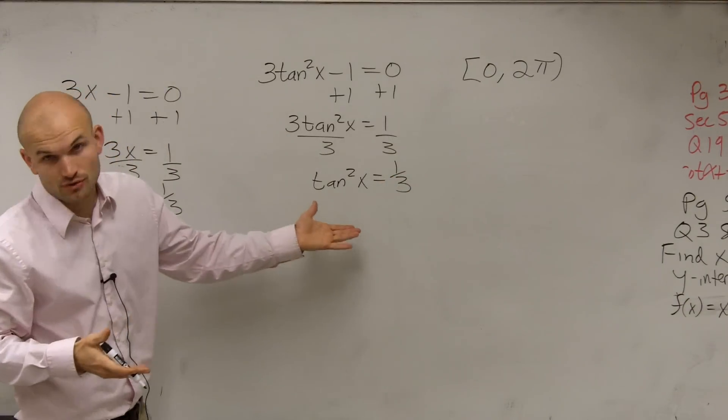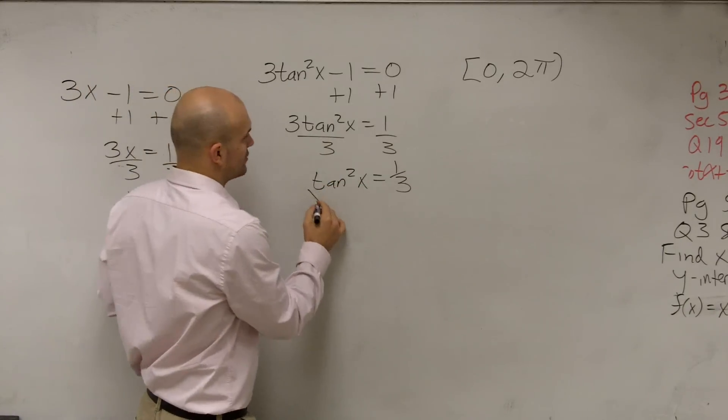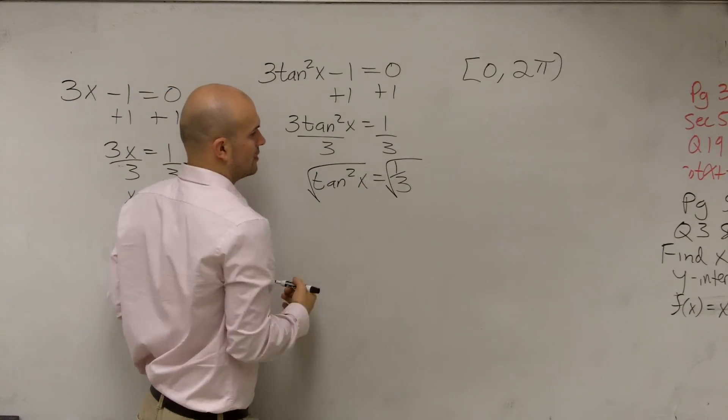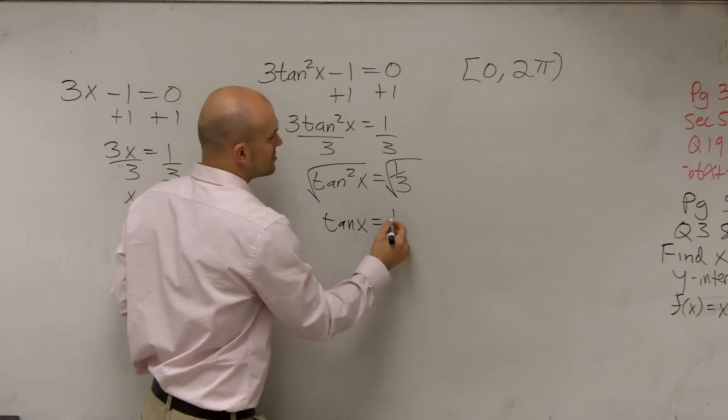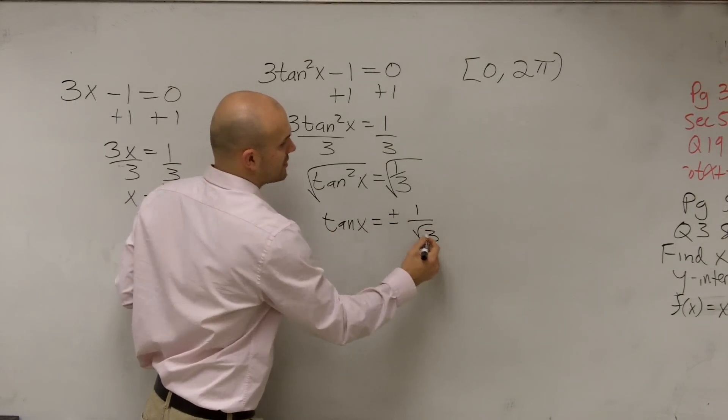Now this is tangent squared, so I have to undo the squaring. So I'm actually going to go an extra step here. Square root, so therefore, I have tangent of x equals plus or minus 1 over the square root of 3.